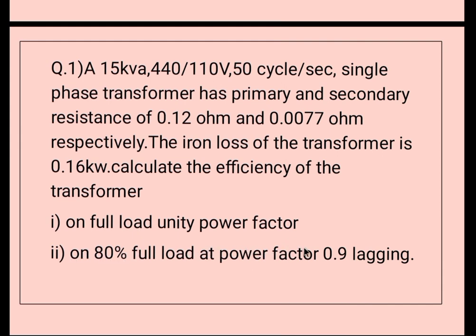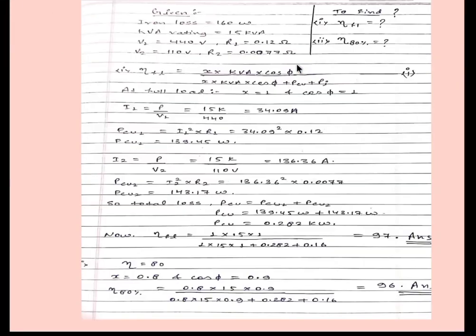Calculate the efficiency of the transformer first on full load unity power factor, second on 80% full load power factor 0.9 lagging. In the question we have given: iron loss 160 watt, kVA rating of transformer is 15 kVA, V1 is 440 volt and R1 is 0.12 ohm, V2 is 110 volt and R2 is 0.0077 ohm.